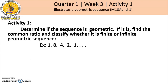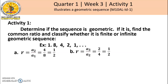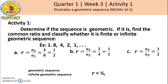For activity 1: Determine if the sequence is geometric. If it is, find the common ratio and classify whether it is finite or infinite geometric sequence. Example number 1: the sequence 8, 4, 2, 1, and so on. To find the common ratio, divide the second term by the first term: 4 divided by 8 equals 1/2. A sub 3 divided by A sub 2: 2 divided by 4 equals 1/2. A sub 4 divided by A sub 3 equals 1/2. So the common ratio is 1/2, it is a geometric sequence, and it is an infinite geometric sequence.